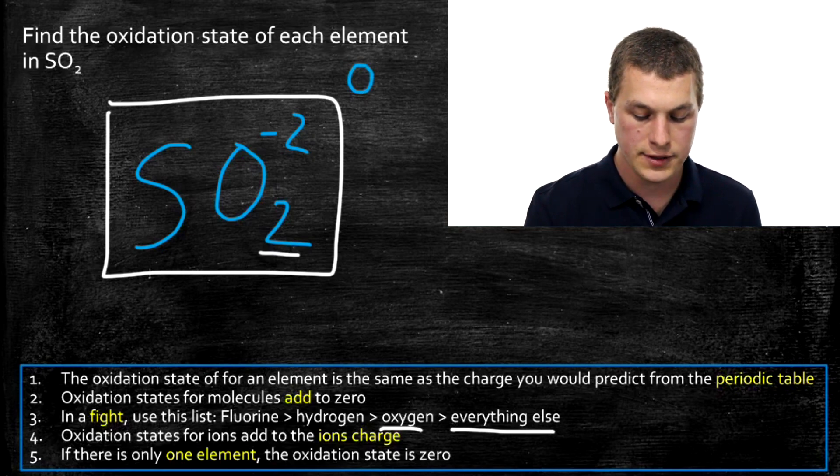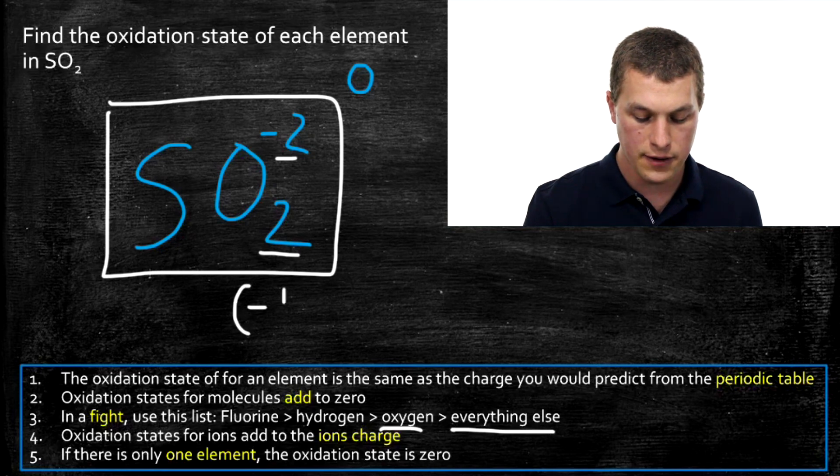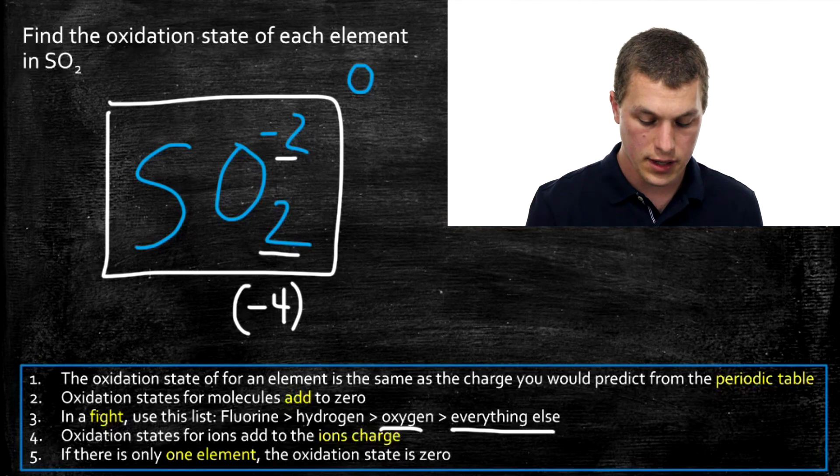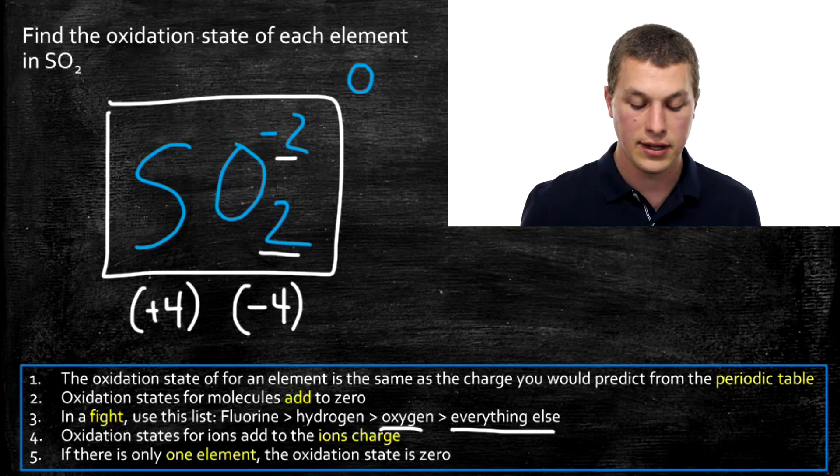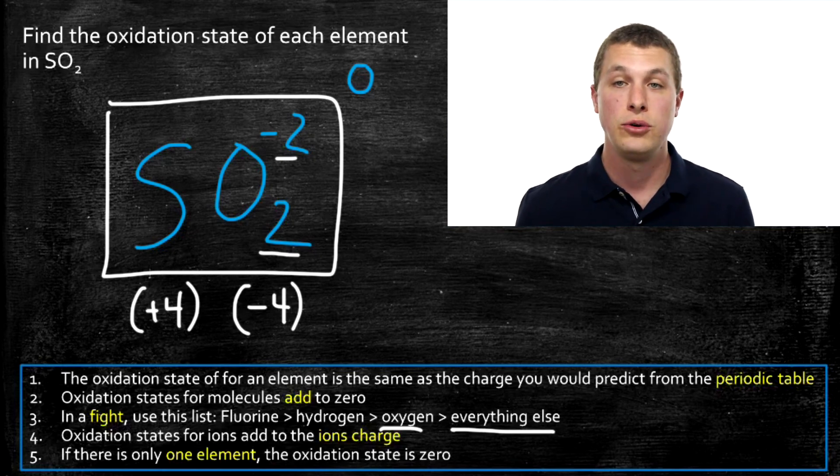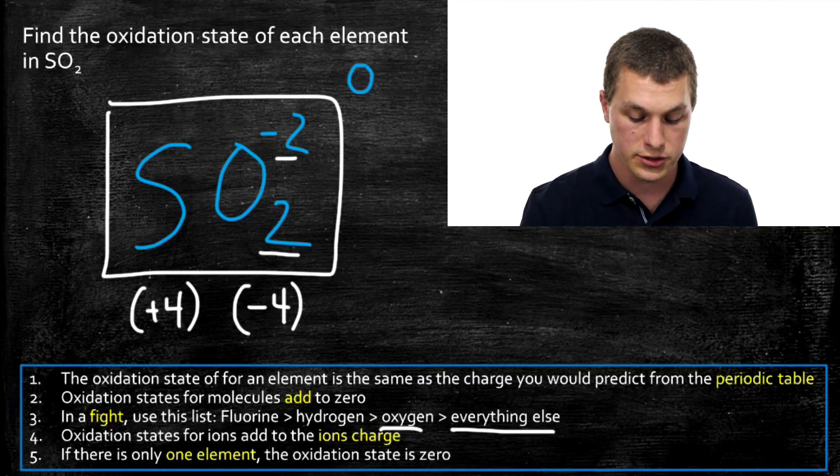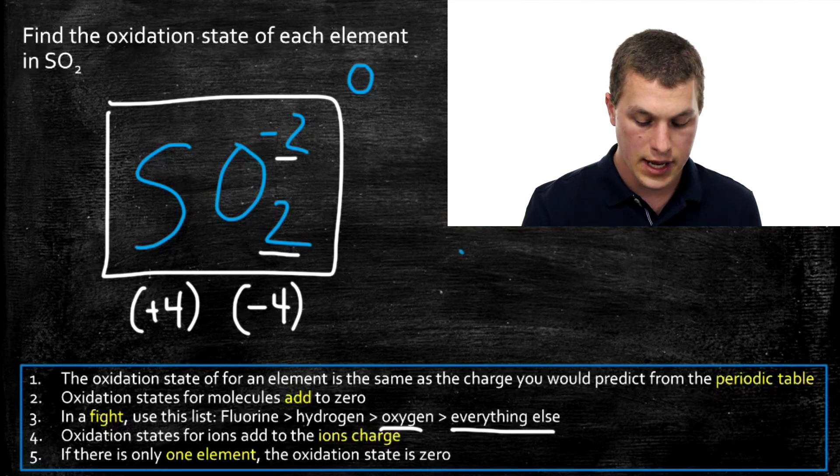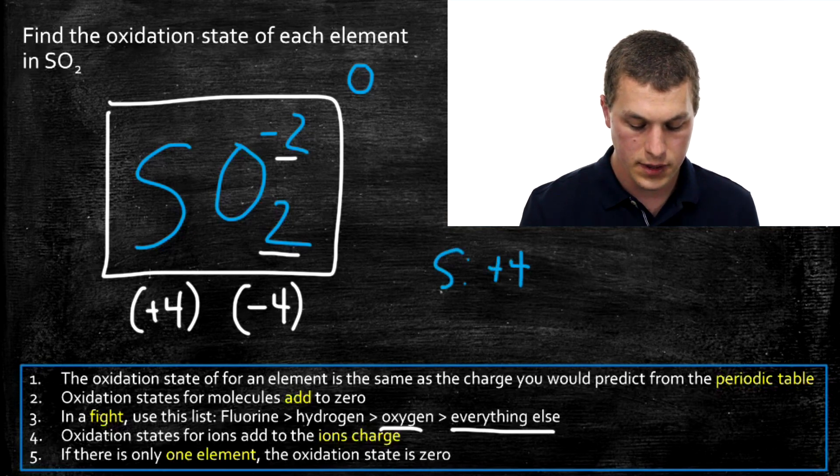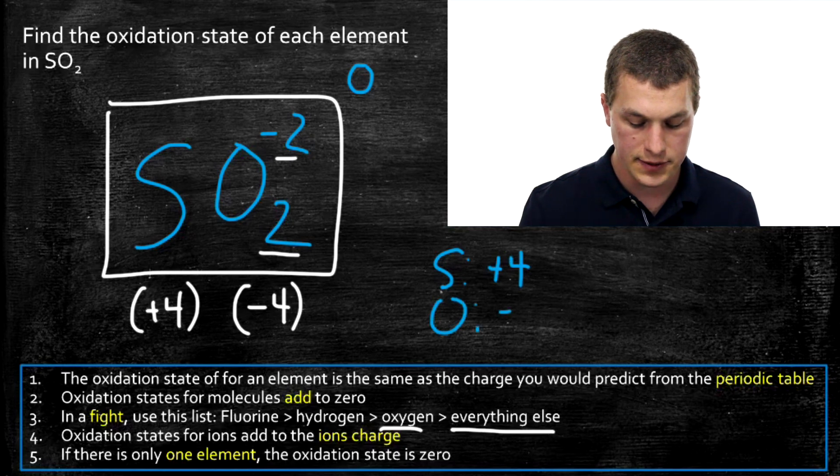I have two things each at negative two. That means I have a total of negative four oxidation state for my oxygen. And that means for my sulfur, I need plus four. Hopefully you're starting to get the hang of how we calculate these oxidation states. At first it looks kind of complicated. You do a few practice problems and it starts to be pretty straightforward. Sulfur has an oxidation state of plus four, and oxygen has an oxidation state of minus two.